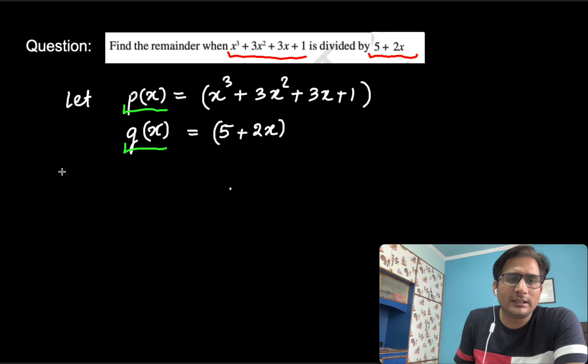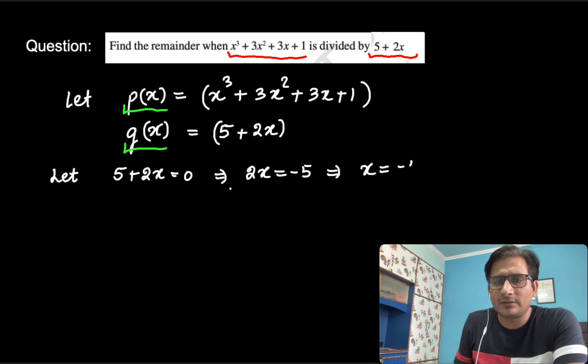Let us find the remainder by using the remainder theorem. First of all, take 5 plus 2x equal to 0. Then, find the value of x from here it is minus 5. The value of x is here it is minus 5 by 2.